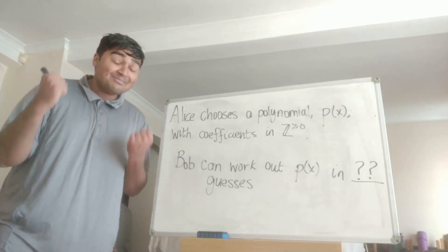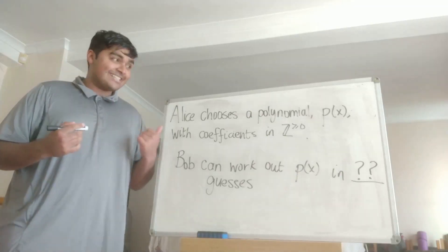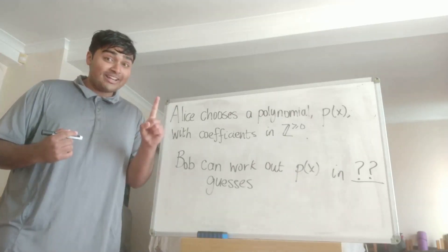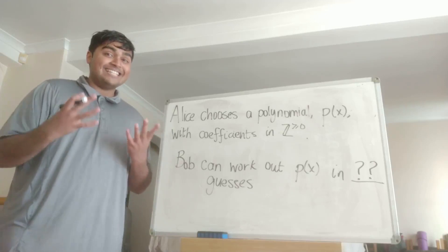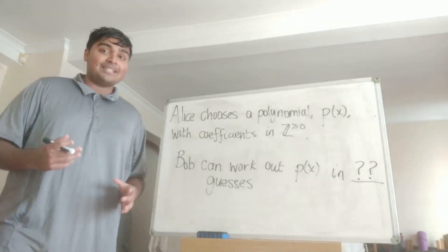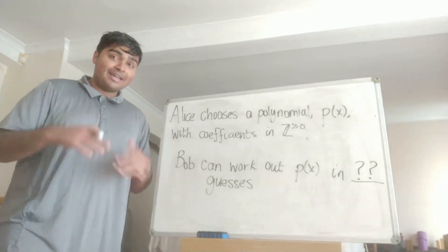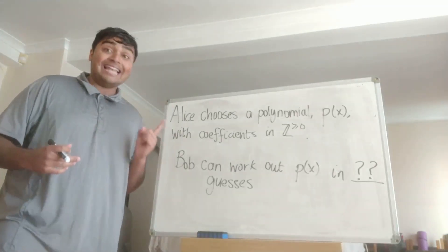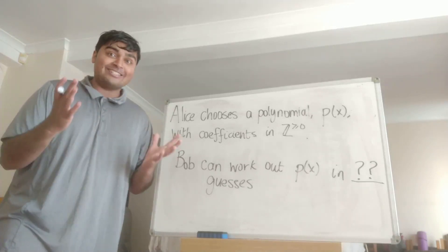Now, what's absolutely amazing is Bob can actually get Alice's polynomial in just one guess. So he can ask Alice to plug in just one number into her polynomial and then that will spit out some number, and then from that number, from that output, Bob can uniquely determine Alice's polynomial. How bizarre is that?